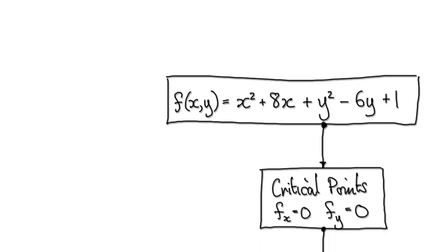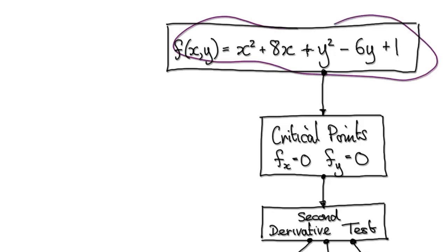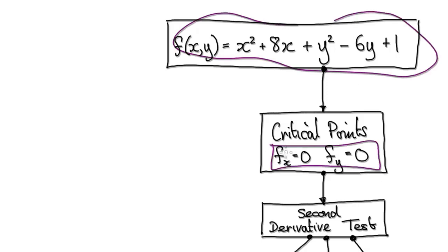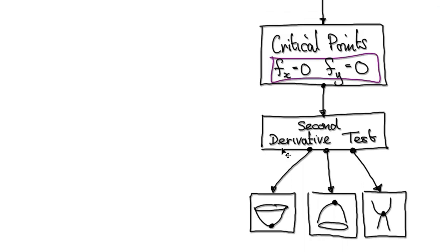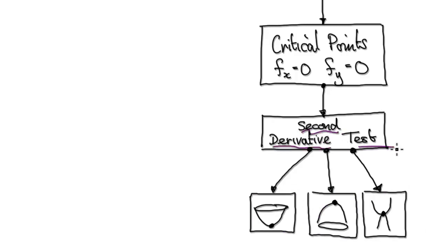We've already seen that for any given surface, we can identify the critical points. Once we've got the critical points, we can apply the second derivative test to identify if it's a local min, a local max, or a saddle point. In this video and the next, I'm going to give you the proof of the second derivative test. In this video, I'm going to gloss over the proof; in the next video, I will take it step by step.